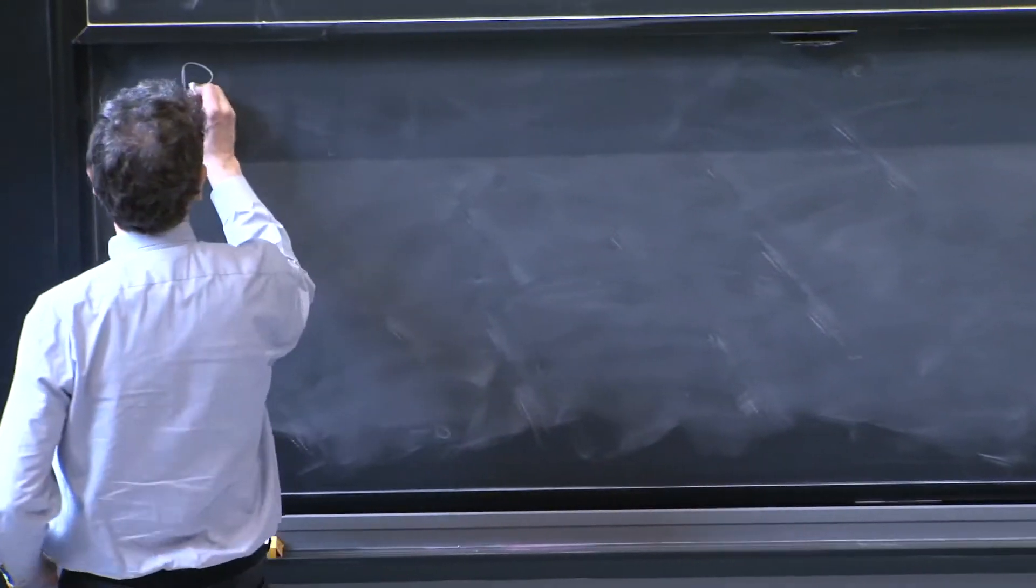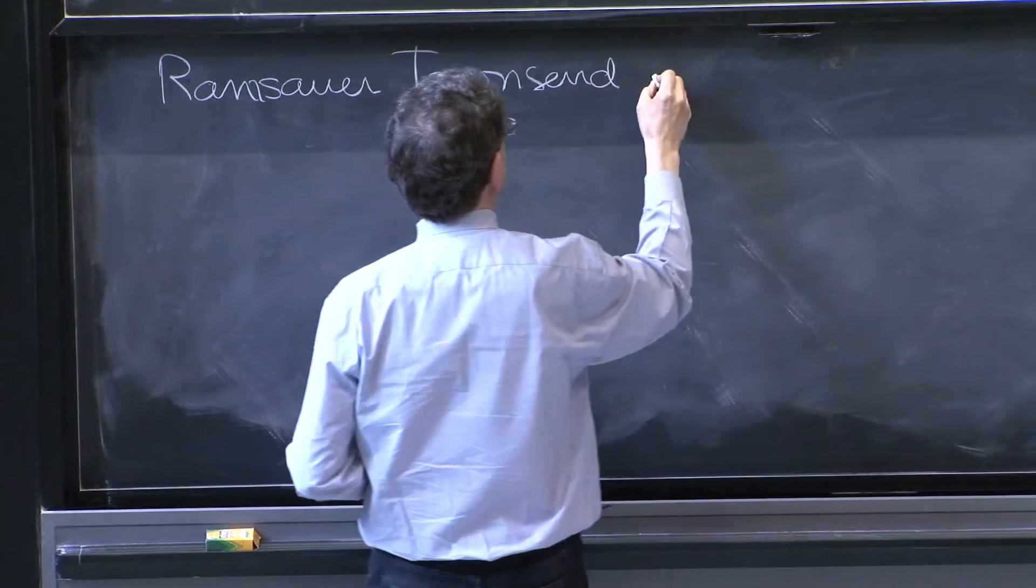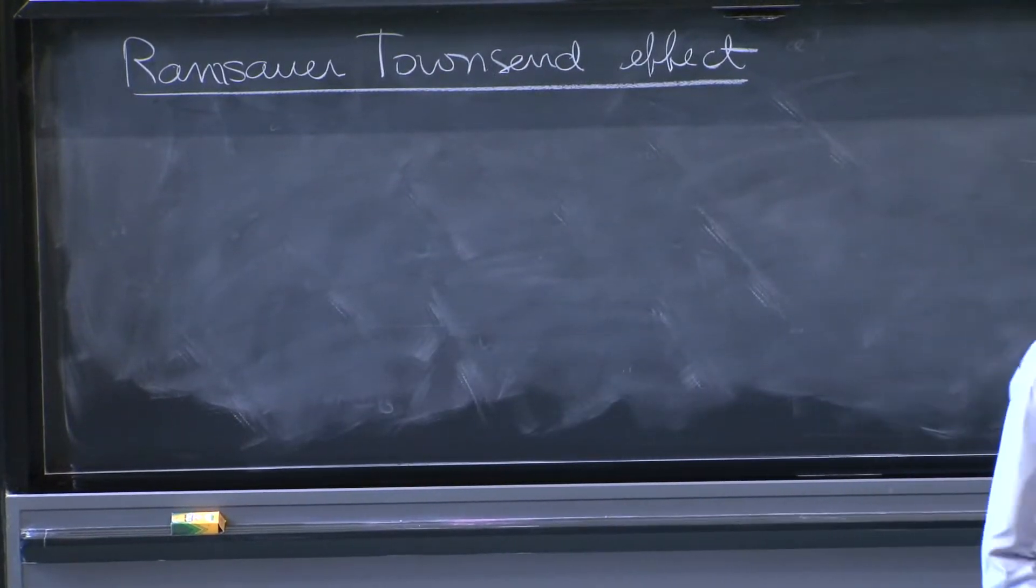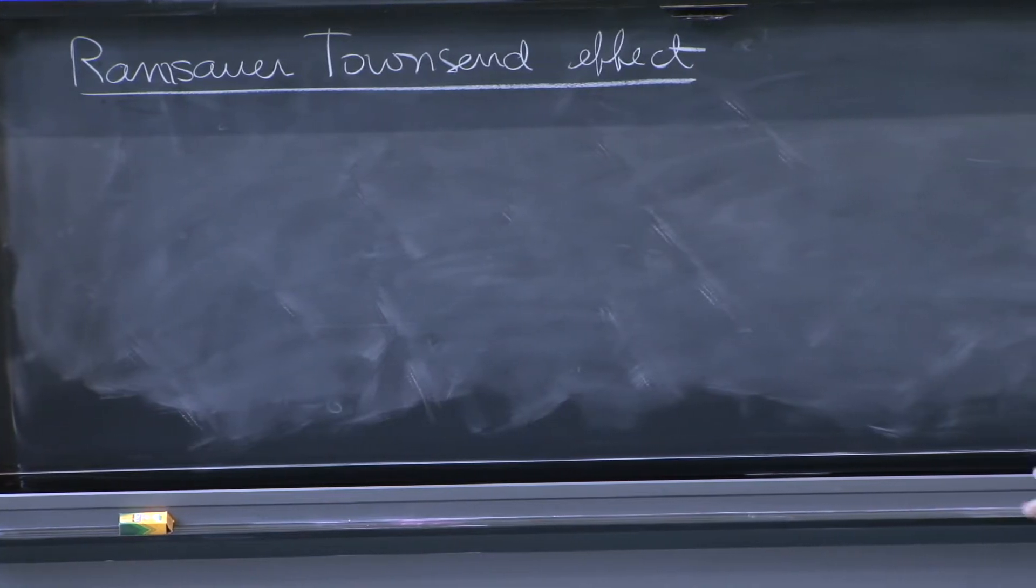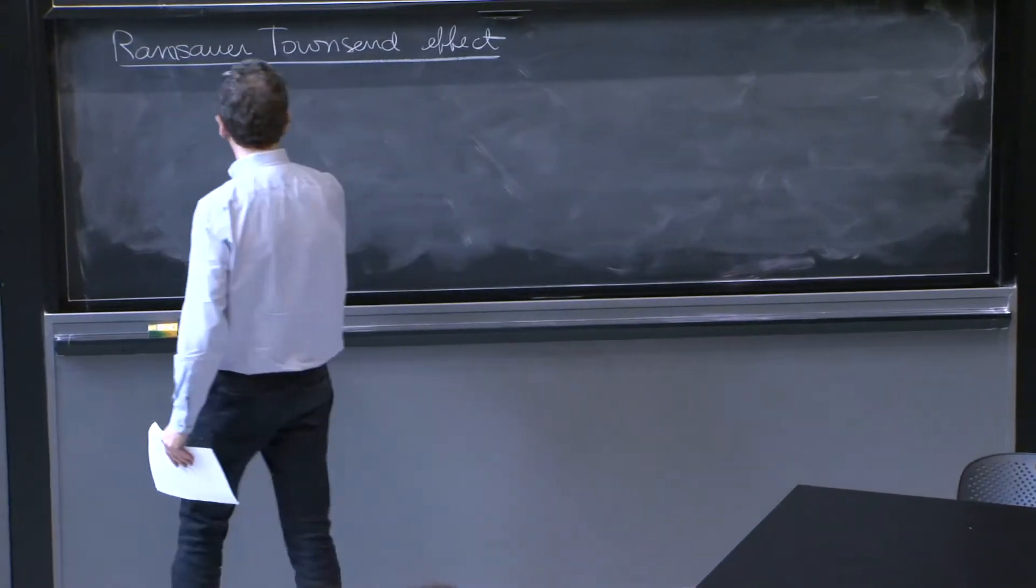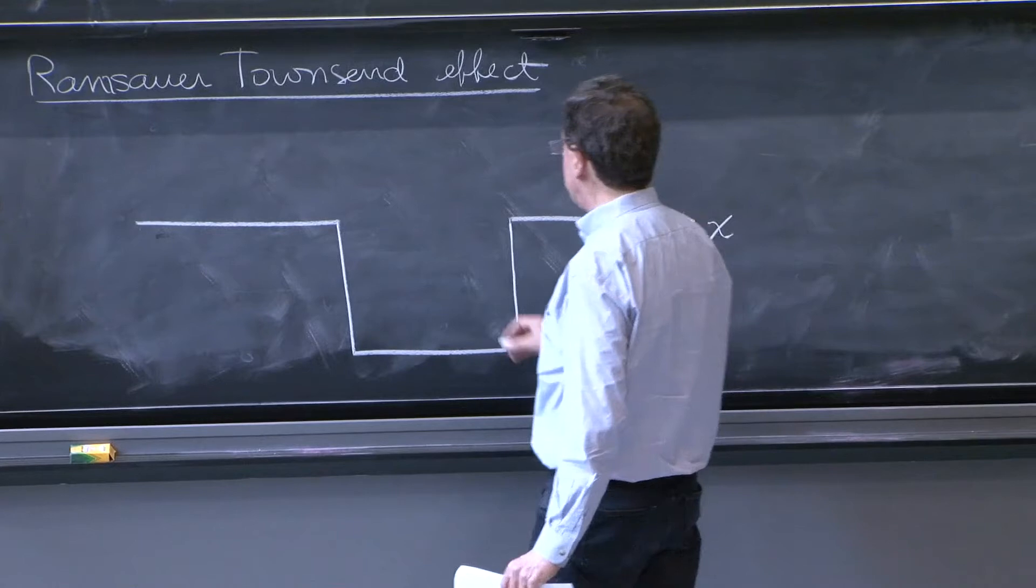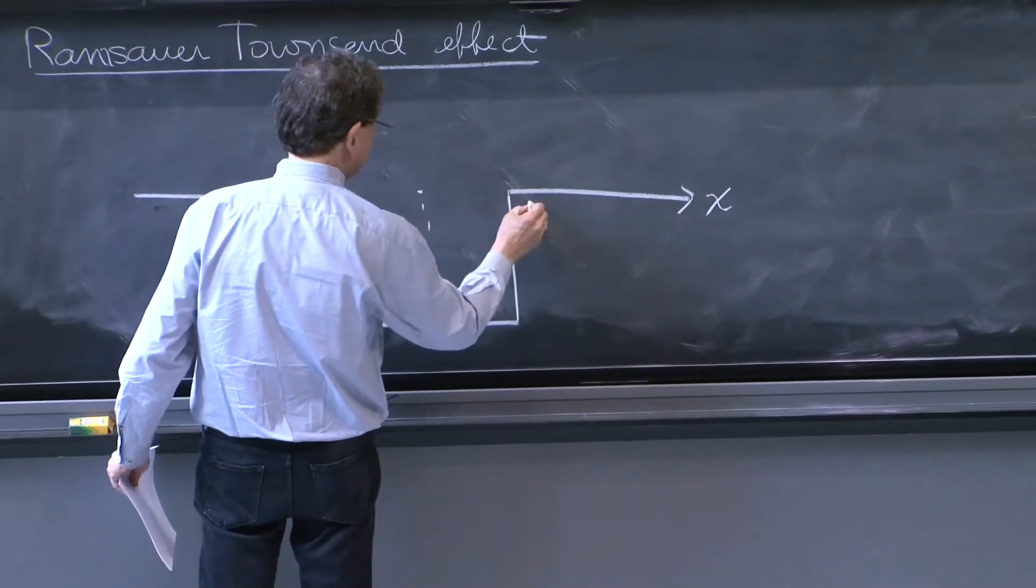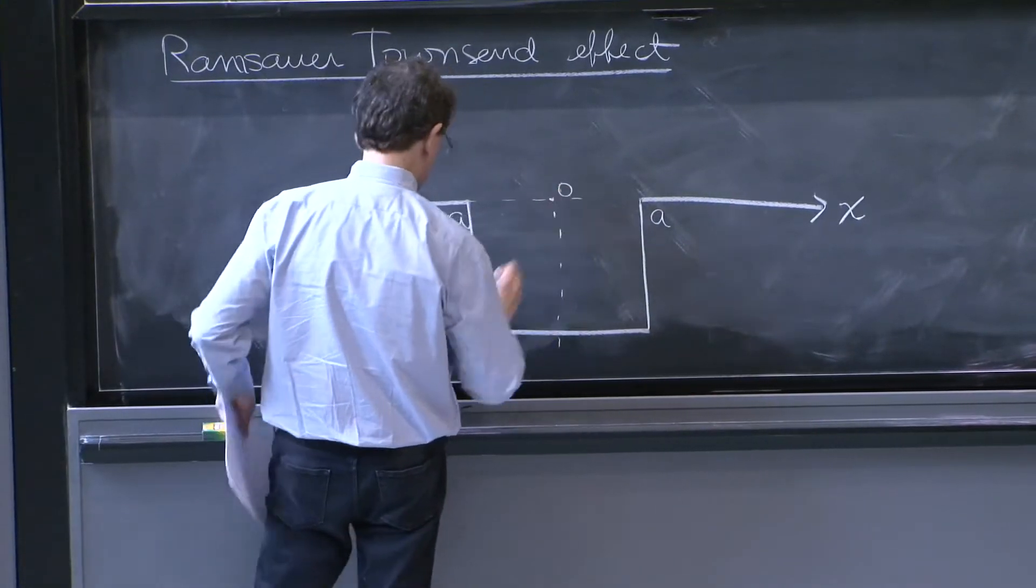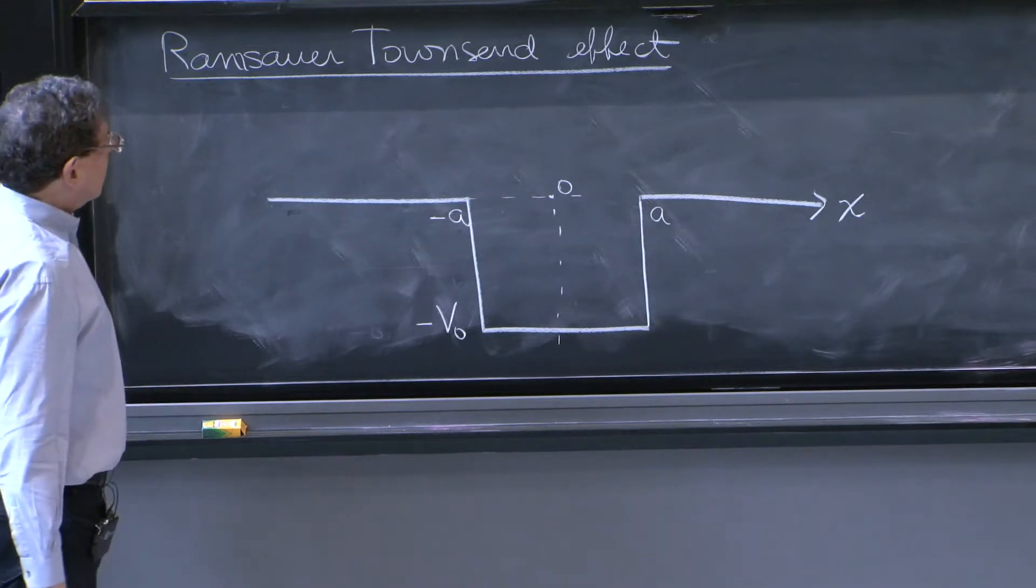Before discussing phenomenologically what was involved in this effect, let's do the mathematical and physics analysis of a toy problem relevant to this effect. And for that toy problem, we have the finite square well. We've normalized this square well having width 2a. So it extends from minus a to a. That's x equals 0. And there's a number minus V0. V0, we always defined it to be positive. Therefore, V0 is the depth of this potential.